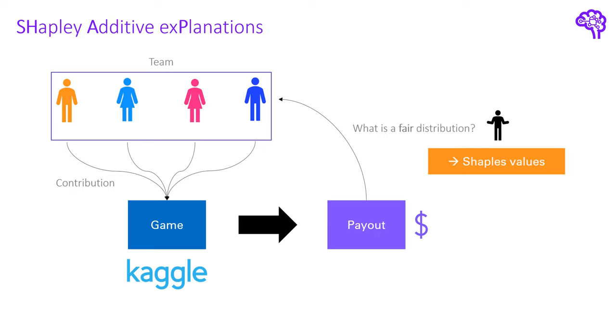The explainable AI algorithm SHAP makes use of these Shapley values. Instead of using players in a game, we can simply think of features in a machine learning algorithm. Each of these features contributed differently to a prediction. So the prediction would be the payout here and the game would be simply the machine learning model.